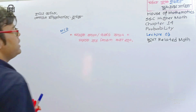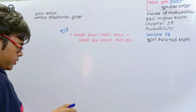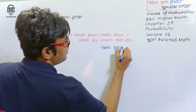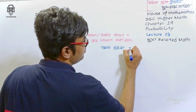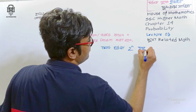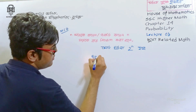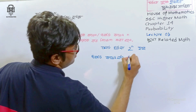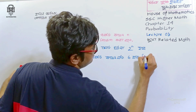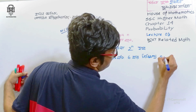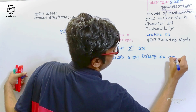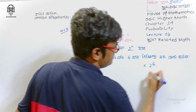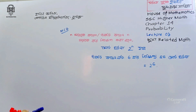If a coin is tossed n times, the total number of outcomes is 2 to the power n. For example, if the coin is flipped 6 times, the total number of outcomes is equal to 2 to the power 6.